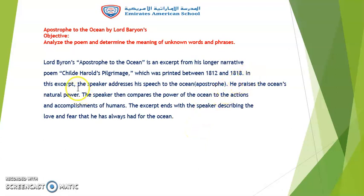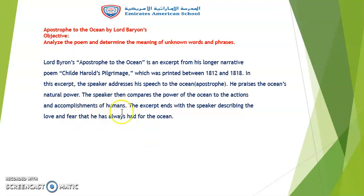In this selection or excerpt, the speaker addresses his speech to the Ocean, which is the apostrophe. He praises the Ocean's natural power. The speaker then compares the power of the Ocean to the actions and accomplishments of humans. The excerpt ends with the speaker describing the love and fear that he has always had for the Ocean, explaining how he reveres and pays respect to it while also fearing it.